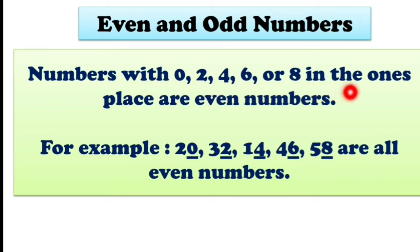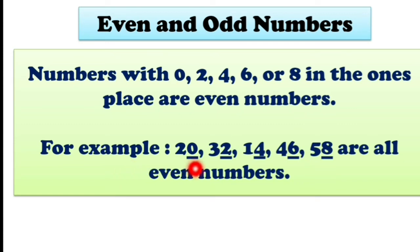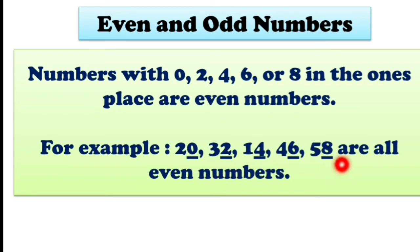Numbers with 0, 2, 4, 6, or 8 in the ones place are even numbers. Numbers whose ones place has 0, 2, 4, 6, or 8 are called even numbers. For example: 20 — ones place is 0; 32 — ones place is 2; 14 — ones place is 4; 46 — ones place is 6; 58 — ones place is 8. These are even numbers. Even numbers have ones place 0, 2, 4, 6, or 8.